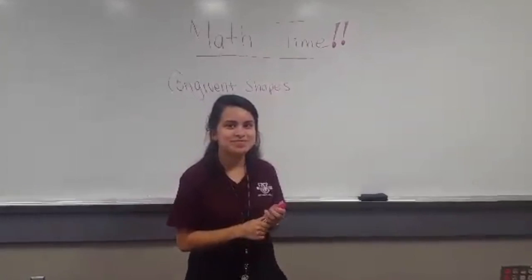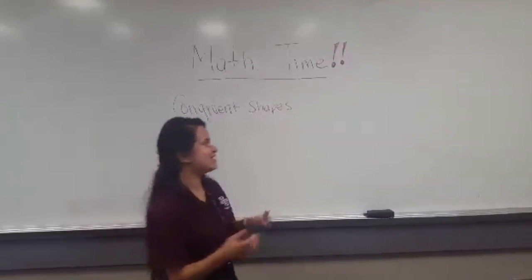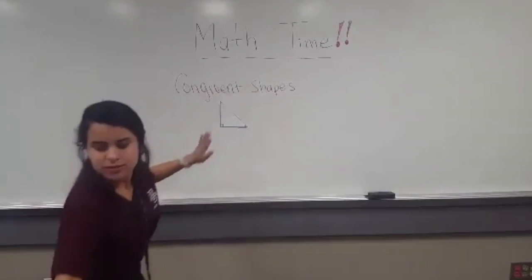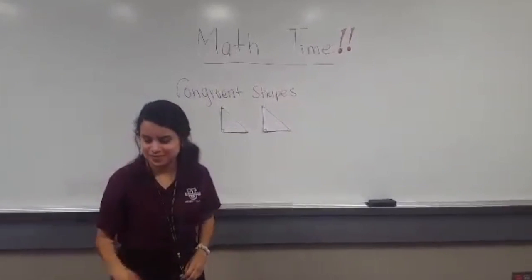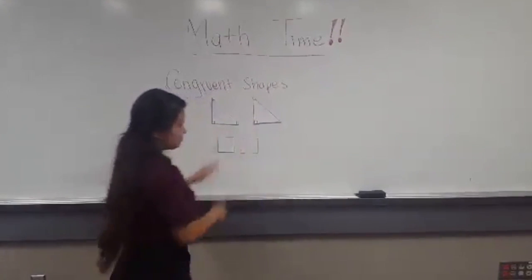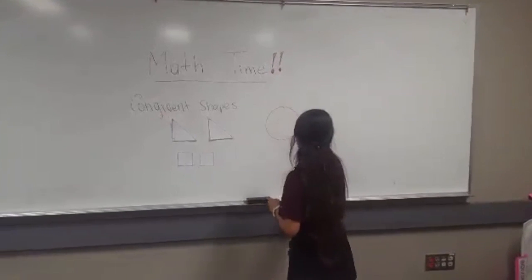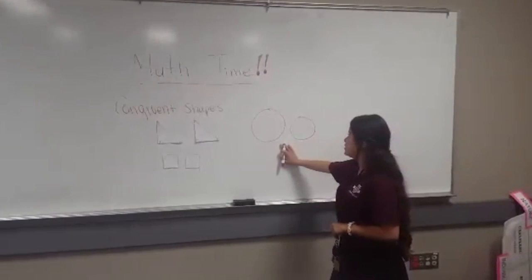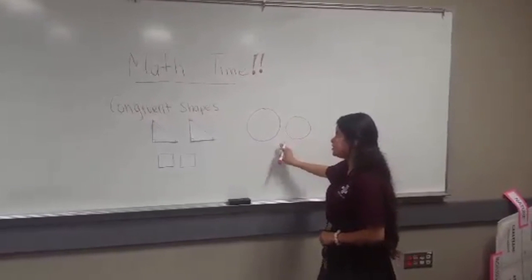Kevin? Same shapes? Same shapes and same size. Same size, correct. So based on that, are these shapes — the ones I'm placing here — are they congruent? Yes. What about these shapes, this one and this one? Yes. Okay, so draw two circles — this one and this one. Are they congruent? Yes. Are they the same shape? Yes. Are they the same size? No. Okay, so then these are not congruent.